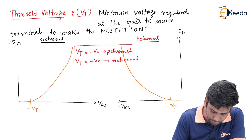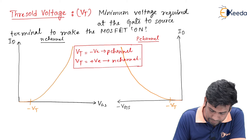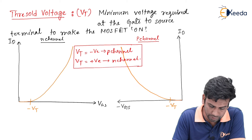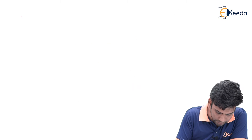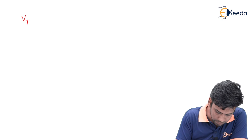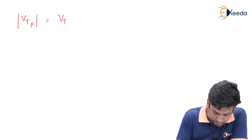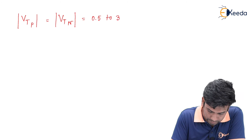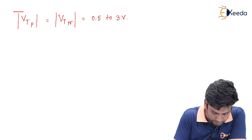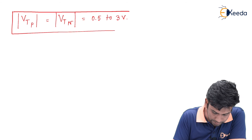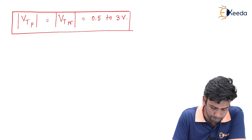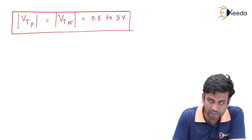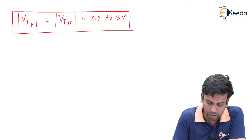This is the conclusion that can be drawn from the transfer characteristics of N-channel and P-channel MOSFETs. Generally, the threshold value for both P-channel and N-channel MOSFETs is of the order of 0.5V to 3V.